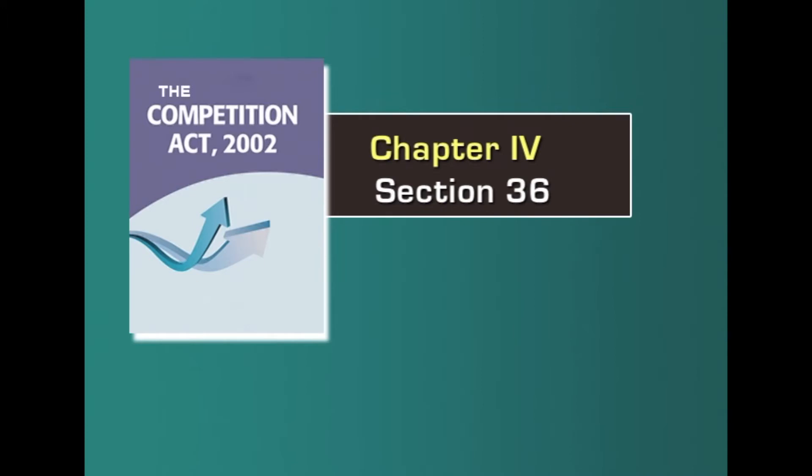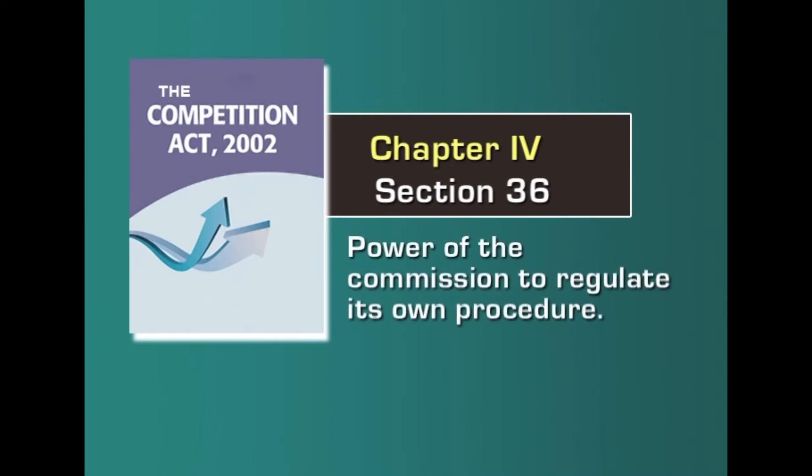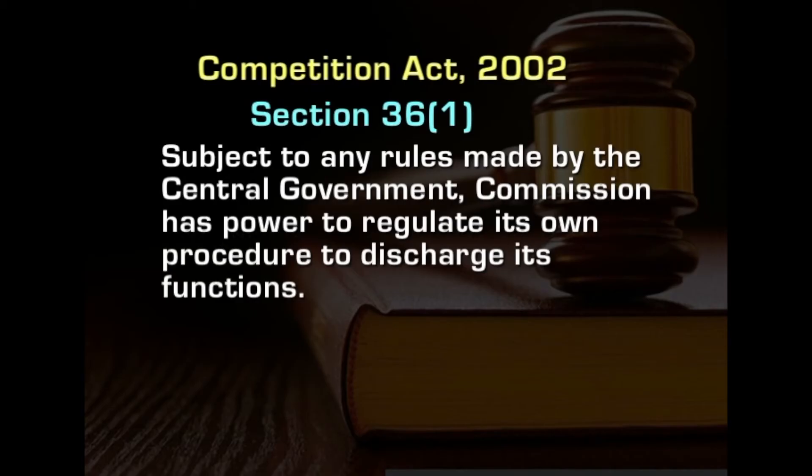Let us look at the provisions which relate to the powers of the commission to regulate its own procedure. This is more particularly to be seen from the perspective of the process of adjudication of any issue brought before it. To discharge its functions under the act, the commission is to guide itself by the principles of natural justice and subject to the rules made by the central government. The commission has the power to regulate its own procedure, discussed under subsection 1 of section 36 of the act.